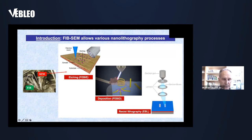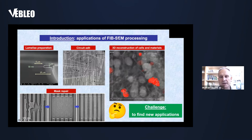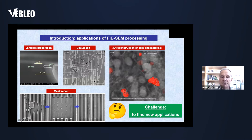The most popular standard applications of FIB-SEM processing are the following. First, lamella preparation for transmission electron microscopy, where you create a 50-nanometer-thin lamella transparent to electrons. Second, circuit editing: when developing integrated circuits in the prototyping phase, you reconfigure circuits by making holes and reconnecting different parts, growing metallic connections such as tungsten.